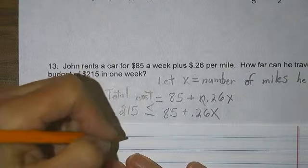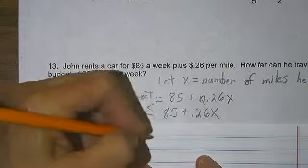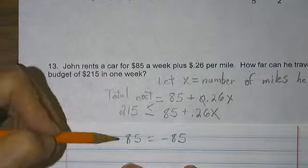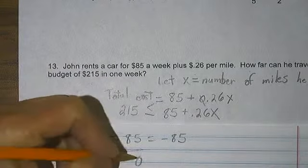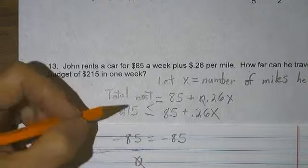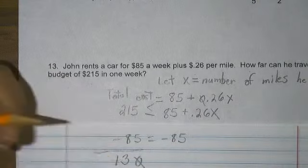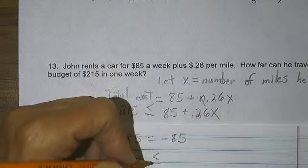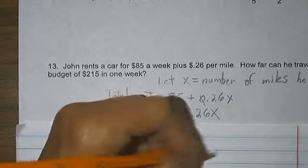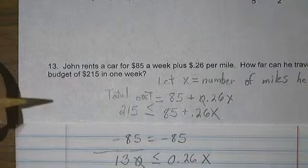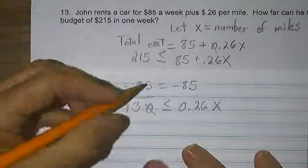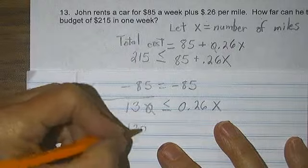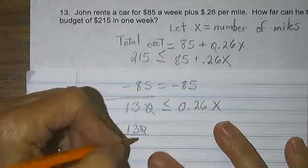$215 minus $85 is $130, is less than or equal to $0.26 times x. So it's 130 divided by 0.26.